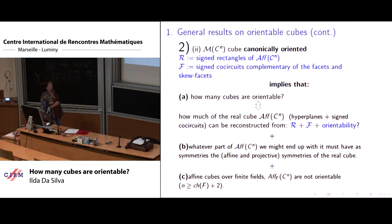Finally, a consequence still of this, the fact that every orientable cube has a canonical orientation, is an exclusion. Every affine cube over a finite field, no one is orientable. They are not orientable. And this is a consequence of if it was orientable, it would have a canonical orientation. There is a circuit we can find for every n greater or equal than the characteristic of field plus two that cannot be oriented. So there is a very fast way of proving that.